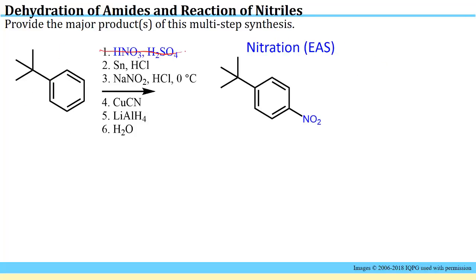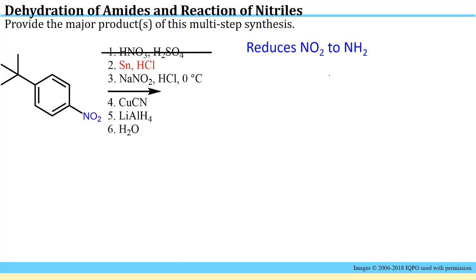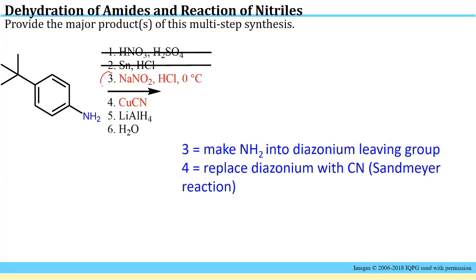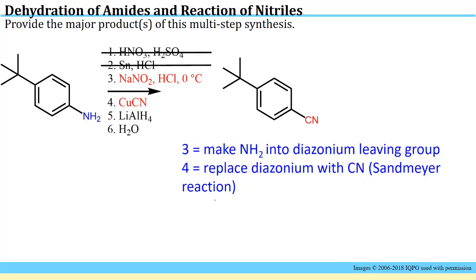After completing step one we would expect this product. In step two, tin and hydrochloric acid mediate a reaction that reduces an NO2 to an NH2 group, so after step two we should have changed the nitro to an NH2. Steps three and four together comprise the diazonium reaction: step three converts that NH2 into the diazonium leaving group, and step four replaces the diazonium leaving group with a CN group using a copper salt — that's a Sandmeyer reaction. After the diazonium replacement we have a cyano group, a nitrile substituent.